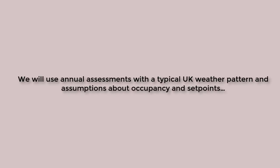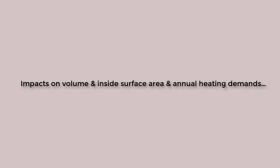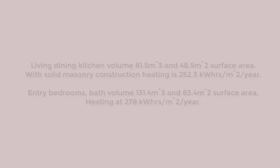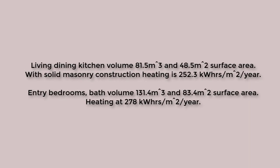For each of the models, I ran an annual simulation using a typical UK weather pattern — in this case Leeds — with a diversity of occupancy and heating set points typical for the living and non-living spaces. What is of interest is what differences the change in reveals introduces in terms of the internal volume of the dwelling and the total internal surface area. With no reveal, we get the initial volume and inside surface area for the living and non-living spaces. Given that the wall is an older-epoch solid masonry wall, it's not surprising that the building performs poorly in terms of kilowatt hours over the year.